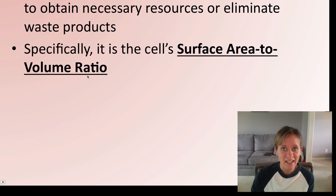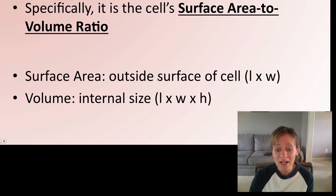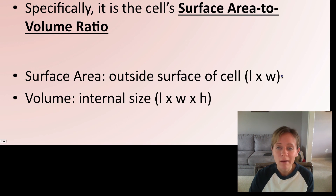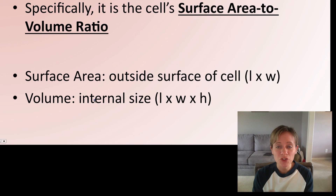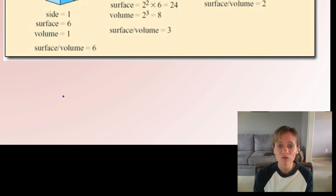When we refer to cell size, what we are really referring to is the surface area to volume ratio. You might be wondering what that is — it's math, but it's not too hard. Surface area is simply the outside surface of that cell: length times width, with units like nanometers squared. Volume is the actual internal size: length times width times height. You take this ratio, and it tells you how efficient that cell is at getting in nutrients and expelling waste. Let's take a look at a figure.